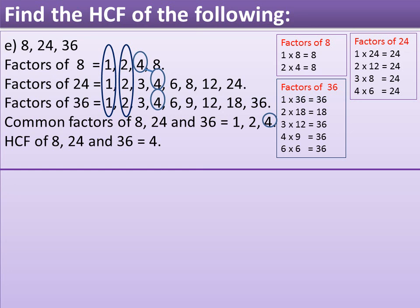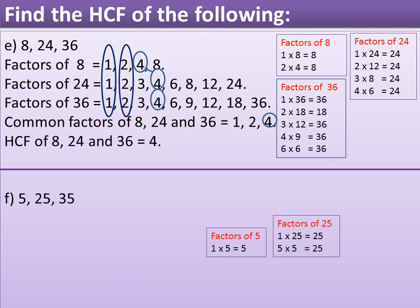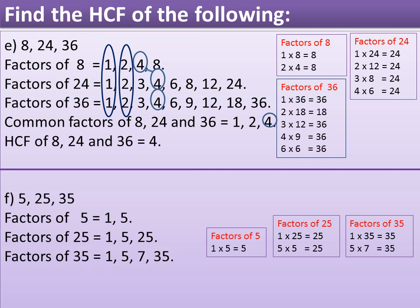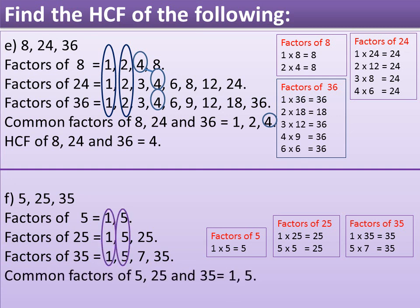Question F: Find the HCF of 5, 25, and 35. Factors of 5 are 1 and 5. Factors of 25 are 1 and 5. Factors of 35 are 1, 5, 7, and 35. Common factors of 5, 25, and 35 are 1 and 5. So the highest common factor of 5, 25, and 35 is equal to 5.